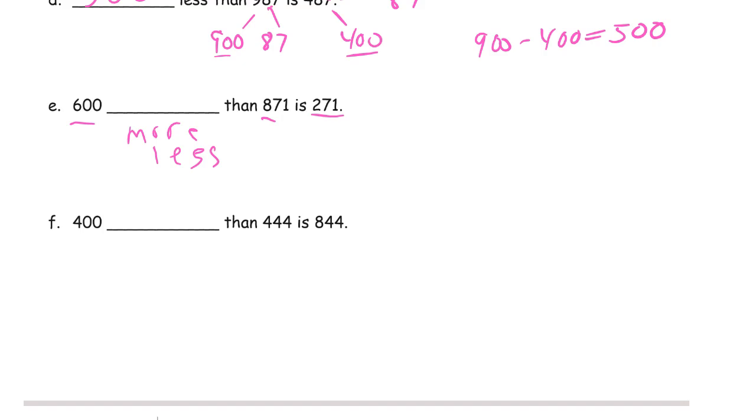Let's just read it. 600 more than 871 is 271. No, it's not more. It's less, right? So it's 600 less than 871. And same thing here. We just need it either more or less.